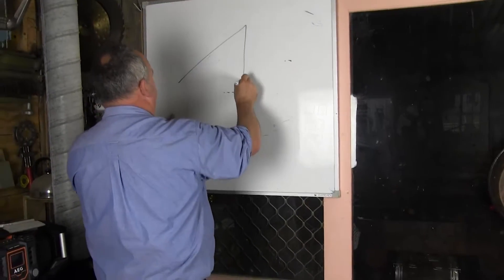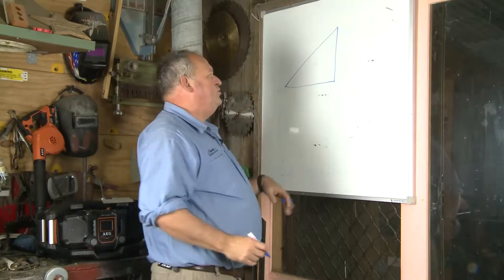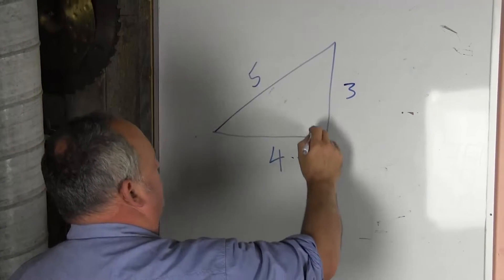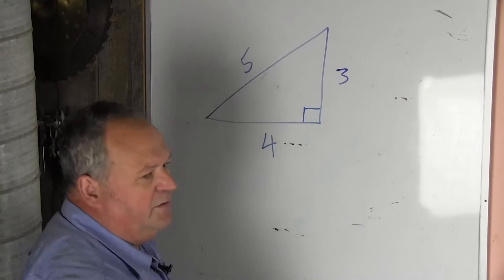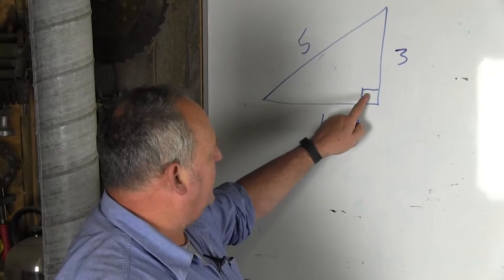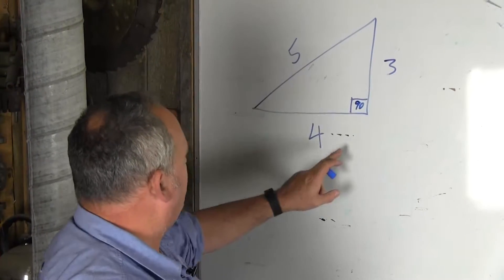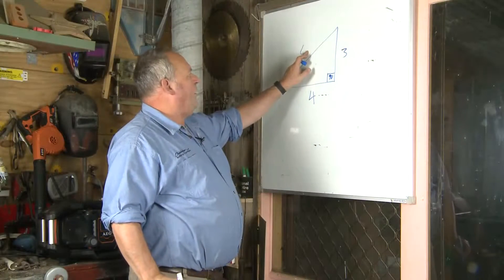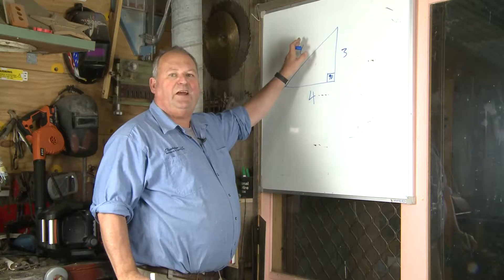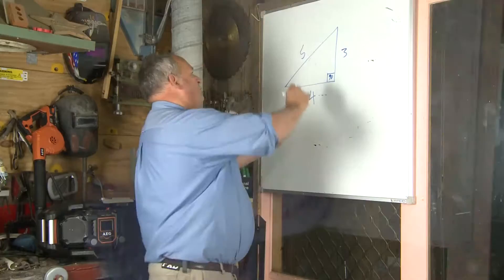So we've got a known triangle, and this one's known and used by everyone, and it's three, four, and five. When it's set up at this ratio, that little symbol means it's 90 degrees there. So three, four, five on the hypotenuse — or we could be calling that rafter length, or all sorts of things — but for our purposes, we're going to go with hypotenuse.